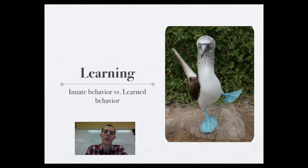A learned behavior is something that the animal develops throughout its life. So innate behavior, you're born with it, it's a switch that flips on and off. Learned behavior is something that is acquired throughout the course of an organism's life.